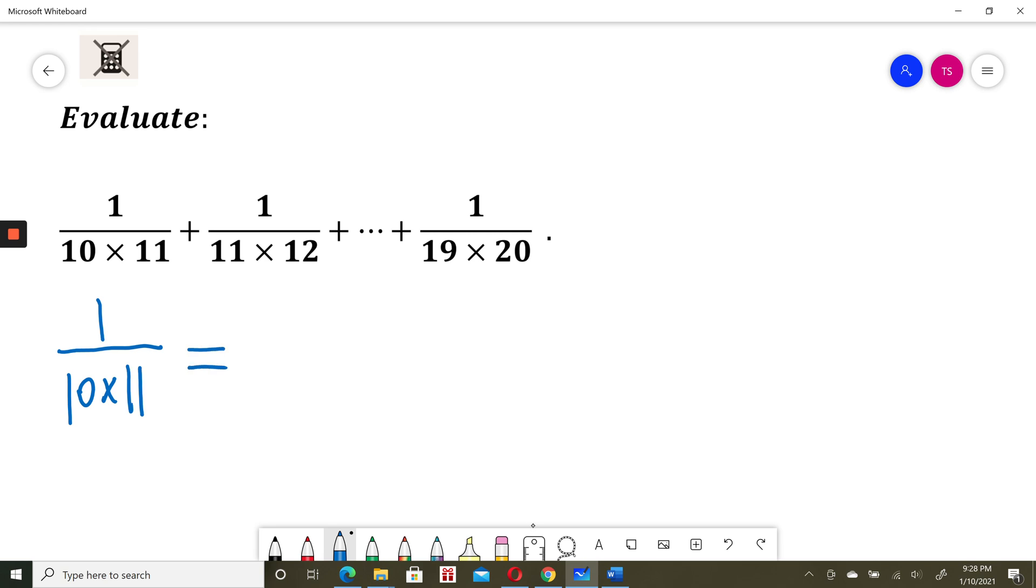1 in the numerator I will write as 11 minus 10. So that will be equal now to 11 divided by 10 times 11 minus 10 divided by 10 times 11.